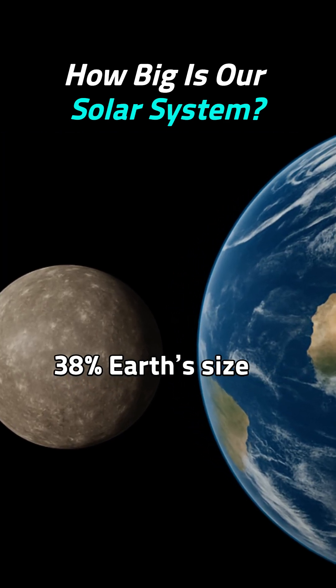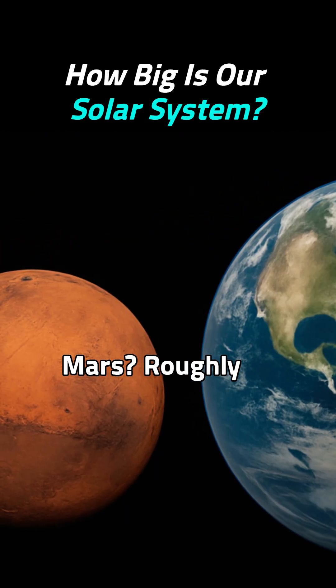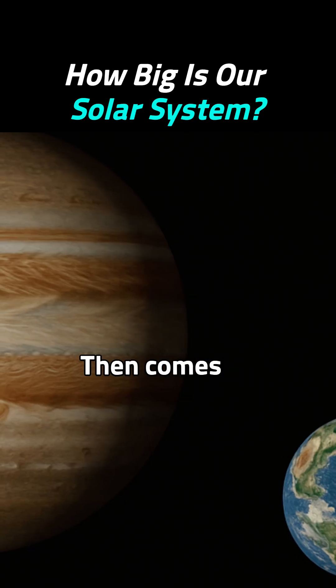Mercury is just 38% Earth's size. Venus is nearly a twin at 95%. Mars is roughly half, about 53%. Then comes Jupiter.